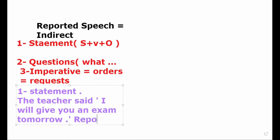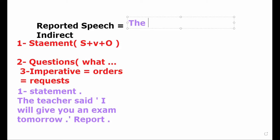How can we change a statement like this into reported or indirect speech? We have two sentences: one outside the speech markers — 'the teacher said' — and one inside: 'I will give you an exam tomorrow.' We have to relate the two sentences and make some changes. The teacher said — no change here.